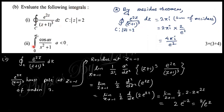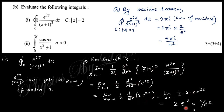Evaluate the contour integral of e^(2z)/(1+z)³ dz. This has a pole at z = −1 (order three) since the limit of (z+1)³·f(z) is not zero. Using the residue formula for a pole of order three: residue = (1/2!)·d²/dz²[e^(2z)] evaluated at z = −1. Taking the derivative gives the residue value, and by the residue theorem the integral equals 2πi times the sum of residues, yielding 4πi·e^(−2).